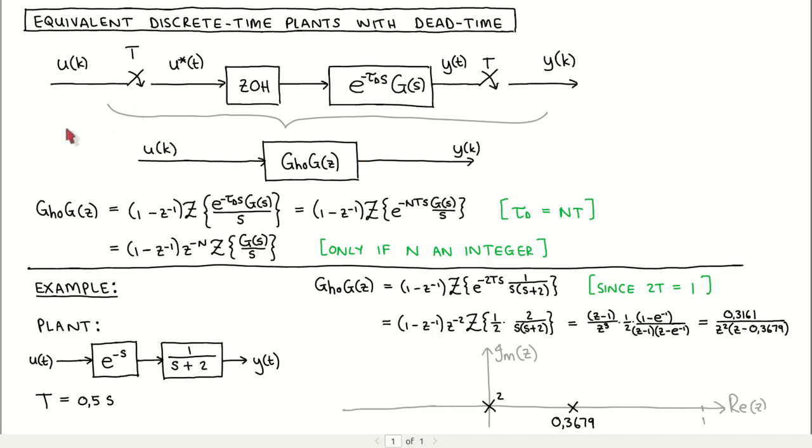To find an expression for the equivalent discrete time plant we use the procedure developed previously where g h o g of z is given by 1 minus z to the power minus 1 times the z transform of the continuous time plant transfer function divided by s. If we redefine the time delay as tau d equal to n times T where T is the sampling period, then we can rewrite this expression as shown here.